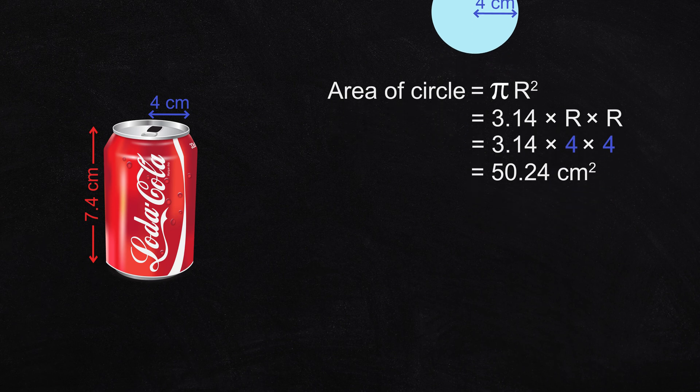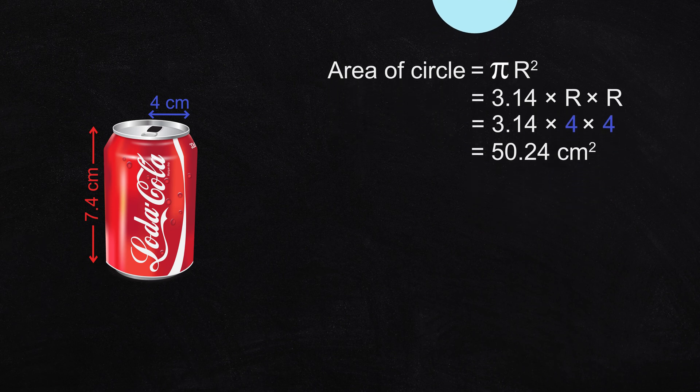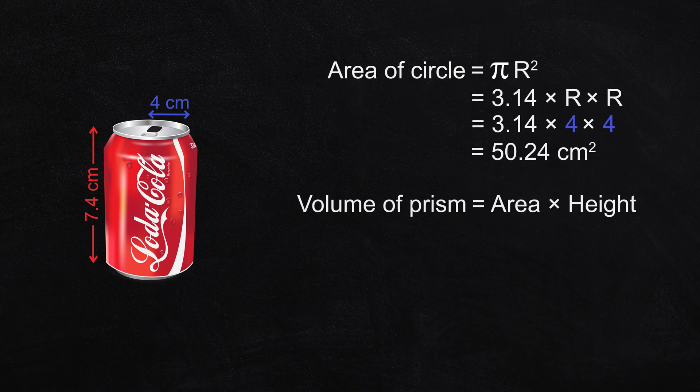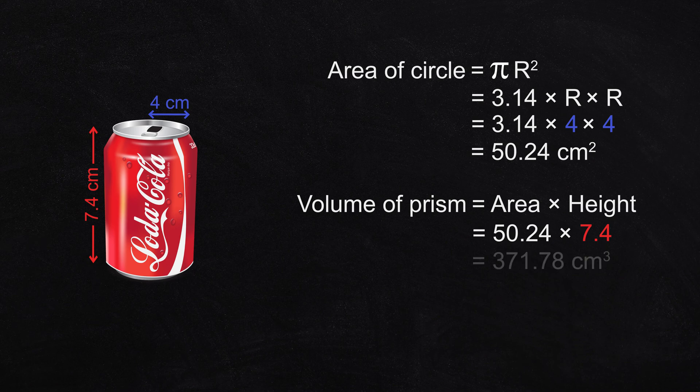Now for the second rule: the volume of this cylinder equals the area multiplied by the height. That's 50.24 multiplied by 7.4, which is 371.78 cubic centimeters.